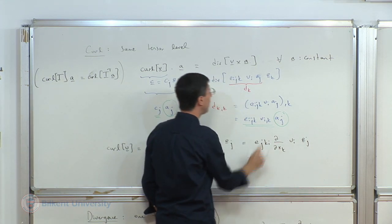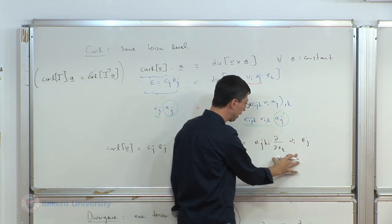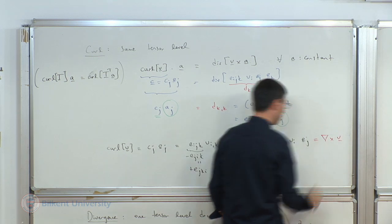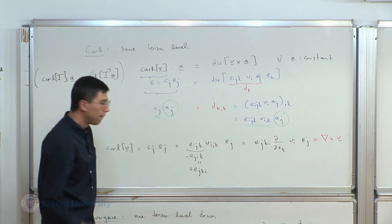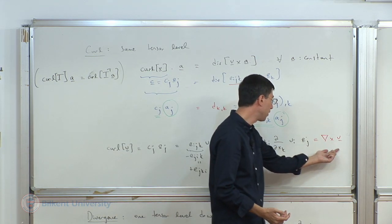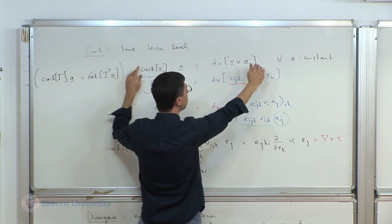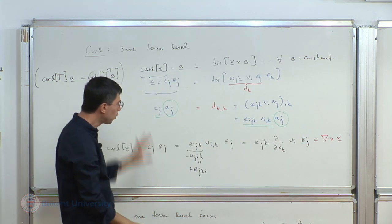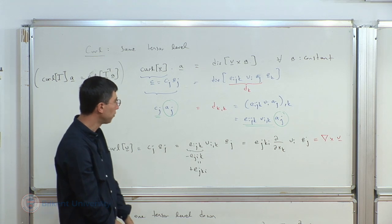Comparing expressions, we recognize that the curl of v equals the gradient operator cross the vector v—the standard definition from which you can derive the component representation. Curl is not something we will use often, but it is meaningful to discuss it at this stage.